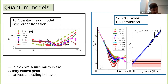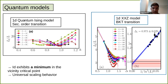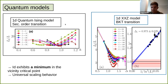We ask the same question for quantum critical points. Interestingly, we observe a very similar behavior to the classical case: a minimum in the intrinsic dimension near the transition, with universal finite size scaling. I show an example with the 1D quantum Ising model and the 1D XXZ model — spin models describing a second-order phase transition and a BKT transition respectively. Essentially we observe the same behavior.